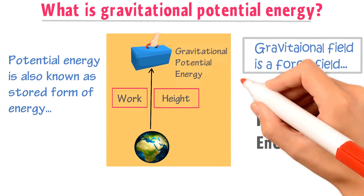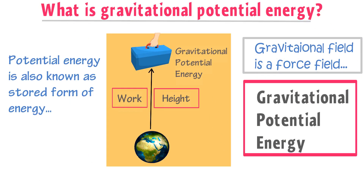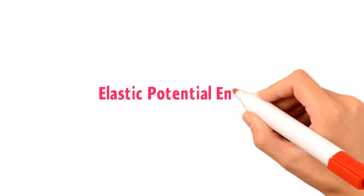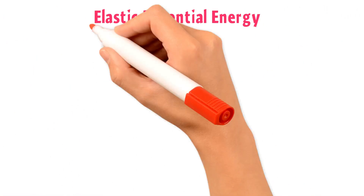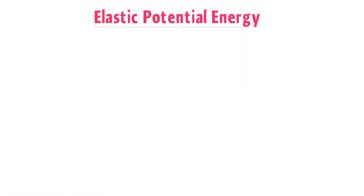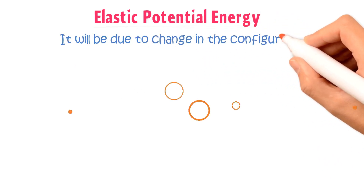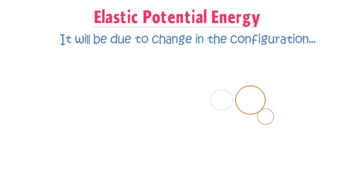Remember that Gravitational Potential Energy only exists when an object is at a particular height above the Earth's surface. Another example of Potential Energy is Elastic Potential Energy. If an object possesses Elastic Potential Energy, it will be due to change in the configuration.